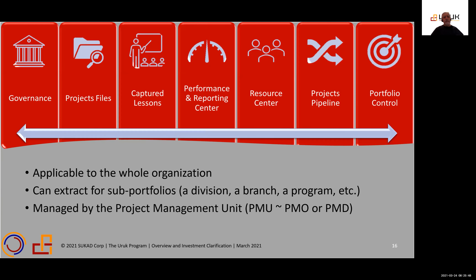These portfolio elements will be applicable to the whole organization. However, when doing reporting, dashboarding, portfolio control, and performance reporting, we can zoom in on a branch, a division, or even a program. When we build projects in the system and identify them as part of a program, we can put an identifier so we can run reports for the program only, a specific division, a branch, or the whole organization — the same applies to dashboarding, project files, and lessons learned. The portfolio management will be managed by what we call a project management unit — we use 'unit' because some organizations have PMOs, some have project management departments or divisions, and 'unit' is generic to represent all of these.